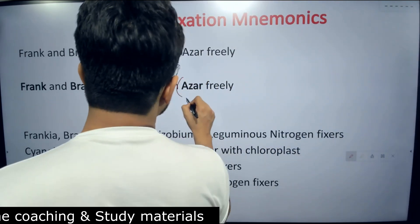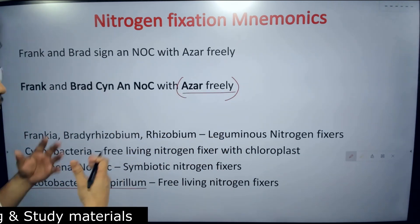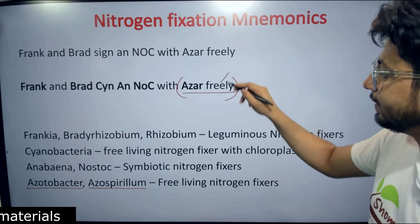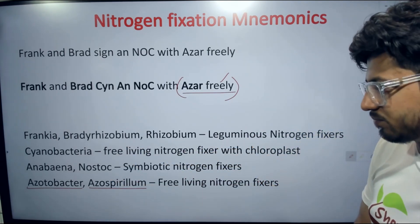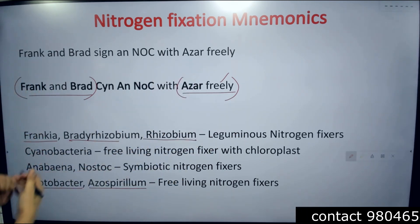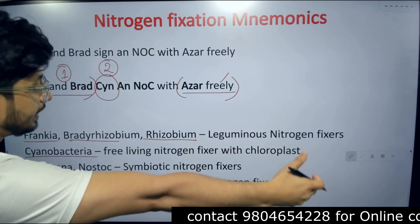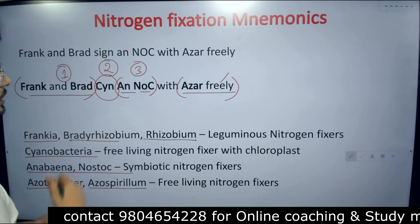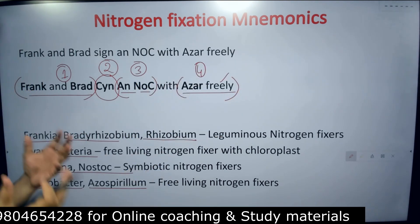The last segment is 'Azar freely'. Azar gives us Azotobacter and Azospirillum — both starting with AZ, which is why I used Azar. 'Freely' means free-living nitrogen fixers. So Azar represents Azotobacter and Azospirillum, which are free-living nitrogen fixers. Now we have four categories: Frank and Brad — Frankia, Bradyrhizobium, Rhizobium (leguminous); Syn — Cyanobacteria (free-living photosynthetic); an NOC — Anabaena and Nostoc (symbiotic); Azar freely — Azotobacter and Azospirillum (free-living).